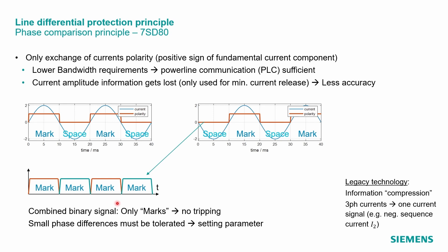In the legacy technology, information compression was used. The phase comparison is done for each phase current in the 7SD80 device. Legacy relays further compressed the information and evaluated only one combined current signal. This could be, for example, a negative sequence current.